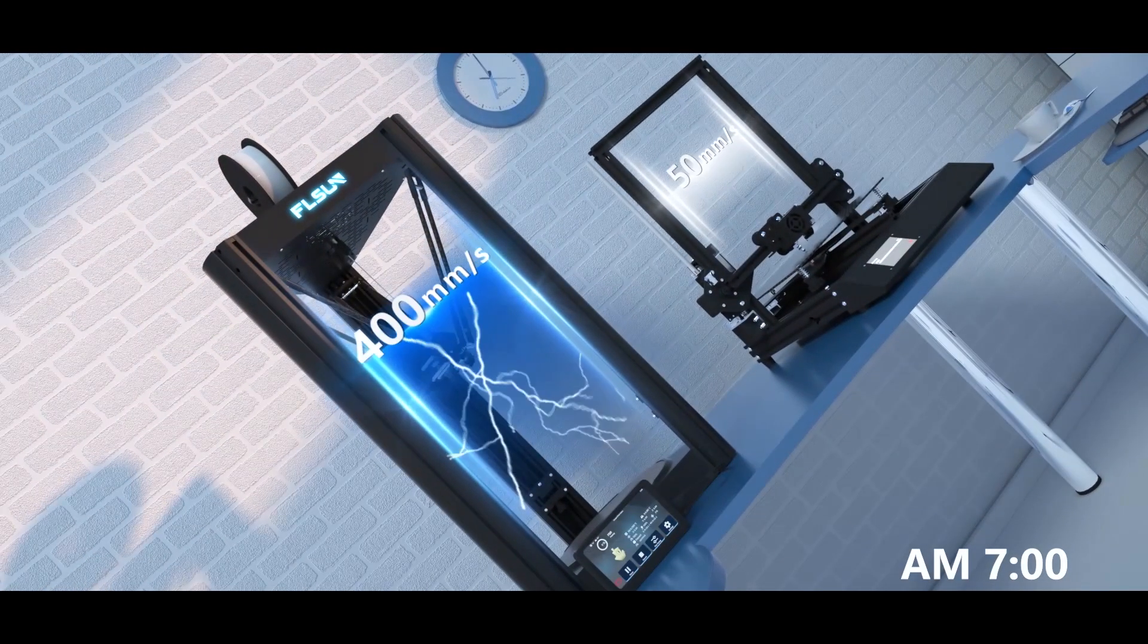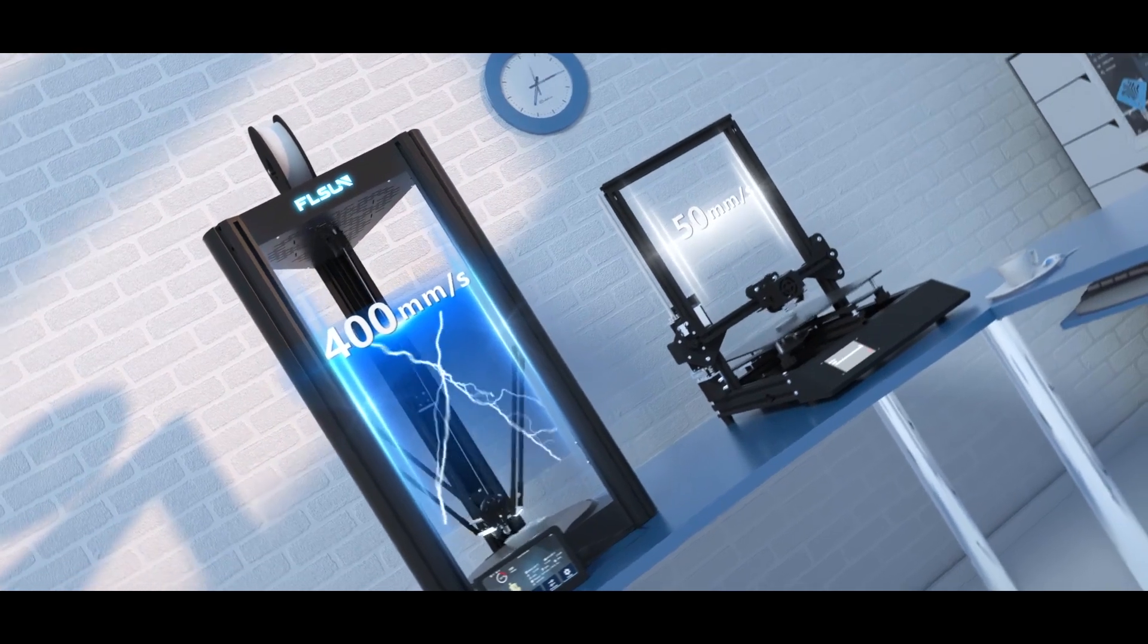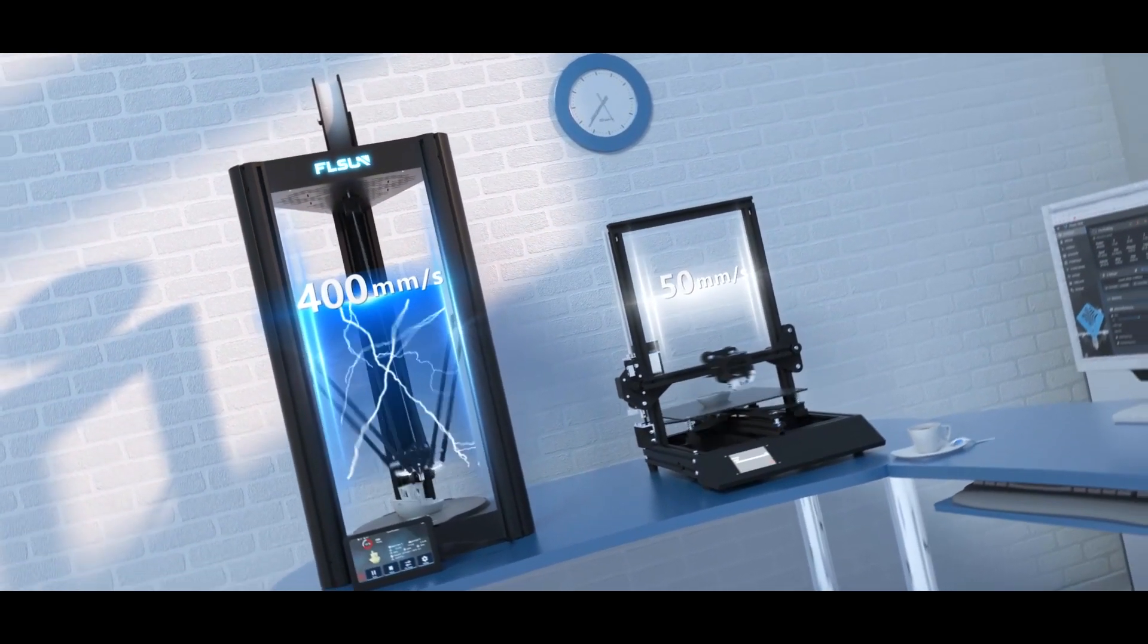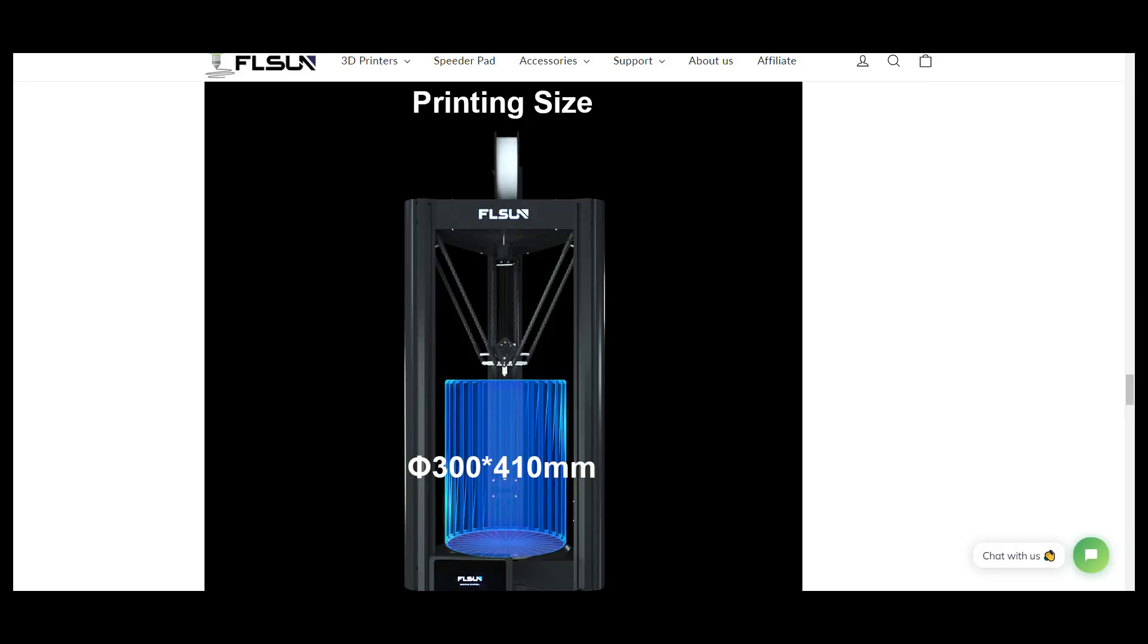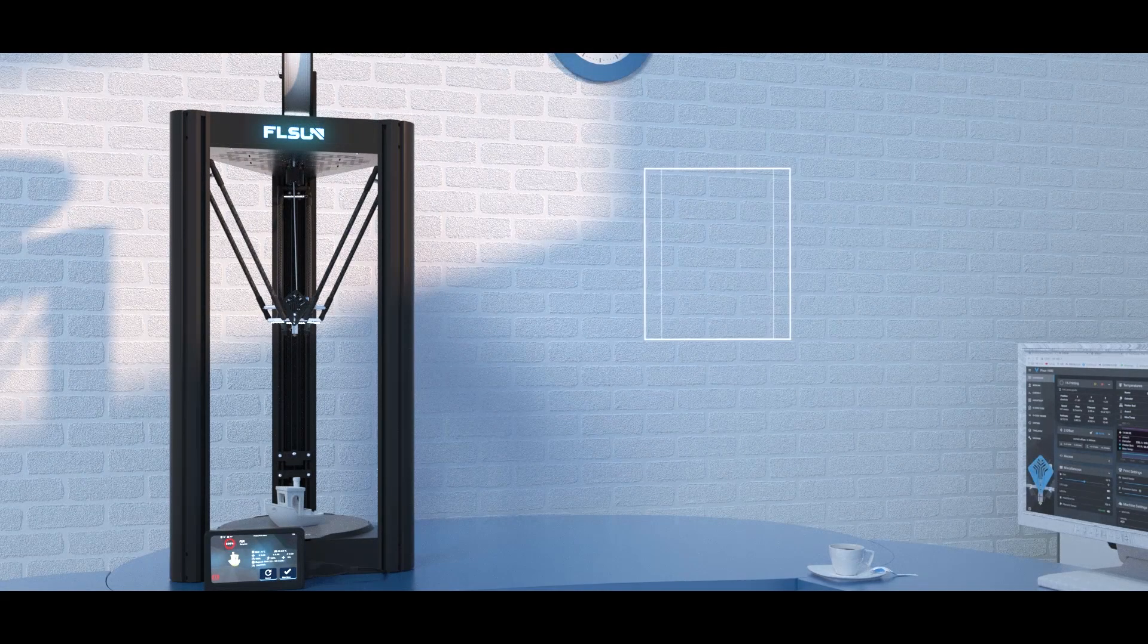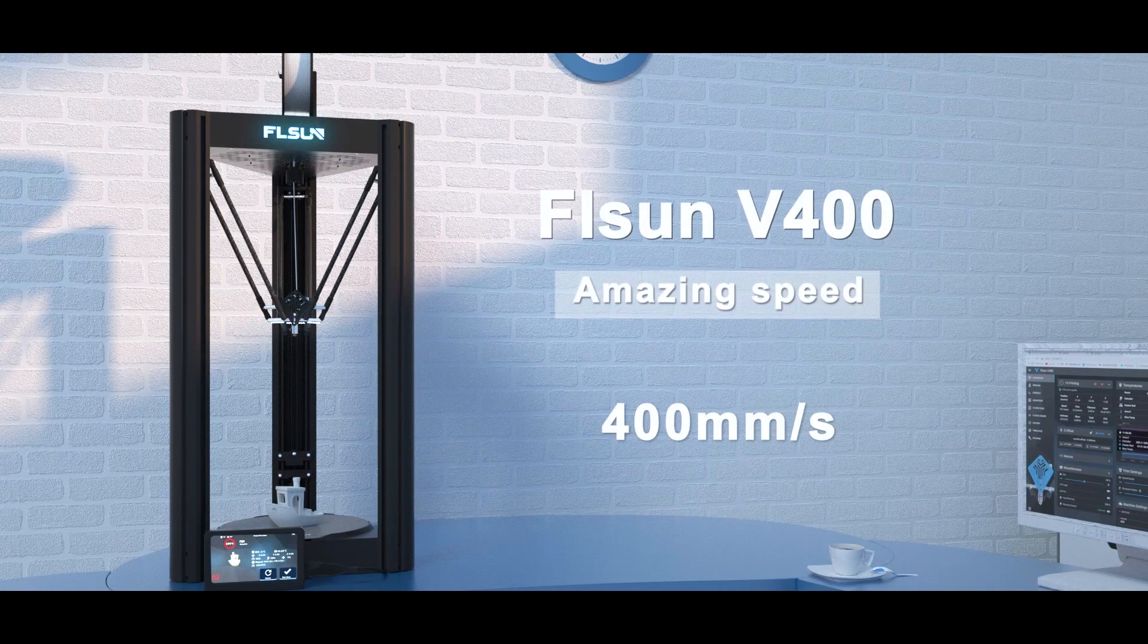FL Sun is a brand focused on Delta printers and dedicated to speed. Our latest product is the V400, which has a printing size of 300 by 410 and a printing speed of 400 millimeters per second.